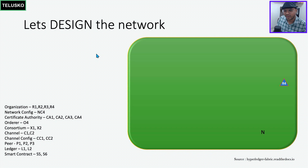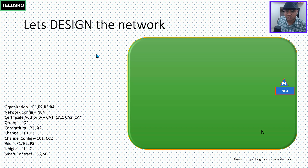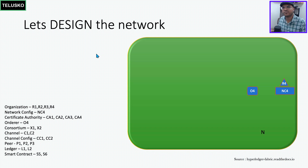Who exactly creates or instantiates a network? That's the orderer. But the orderer is not a magician — it needs a configuration file specifying the number of organizations, nodes, channels, and everything else. So r4 will create a configuration called nc4, the network configuration. We use the convention o4 for the orderer because r4 is taking responsibility for creating the network.